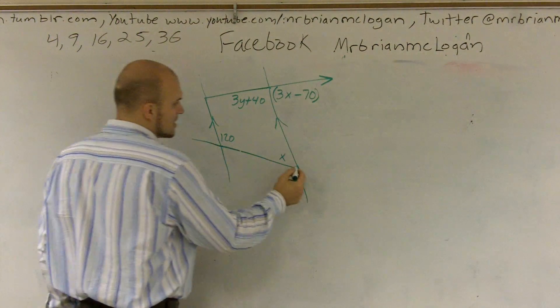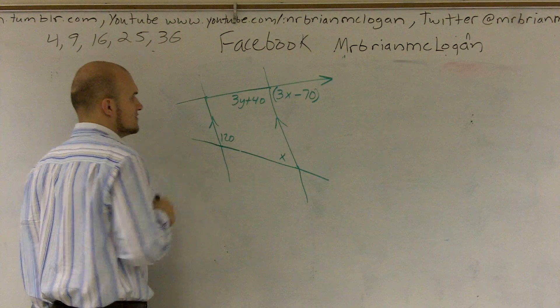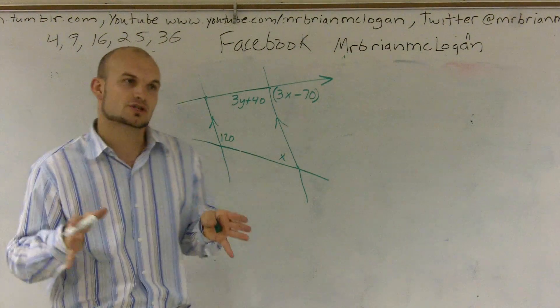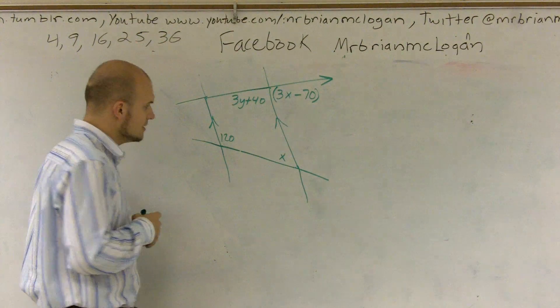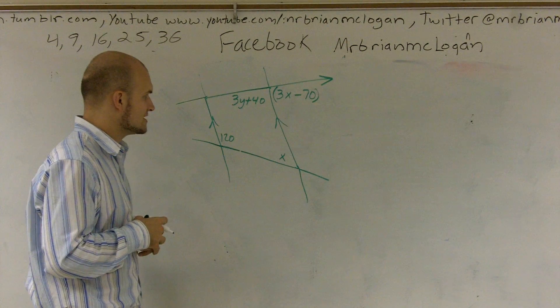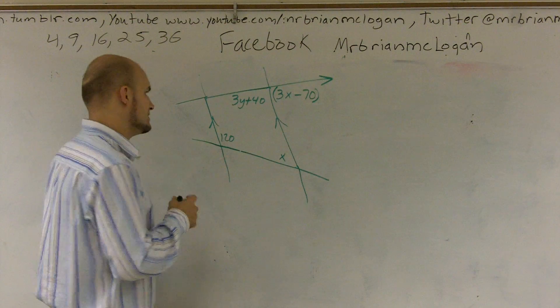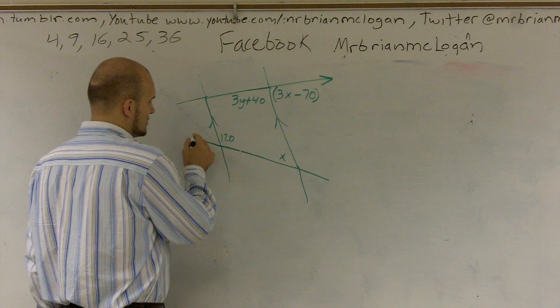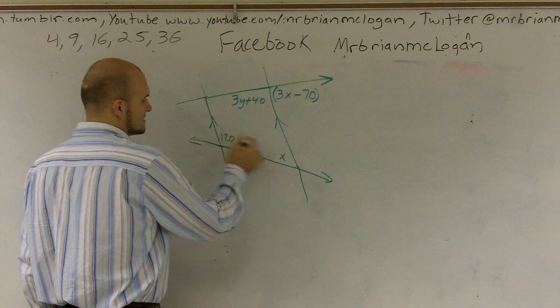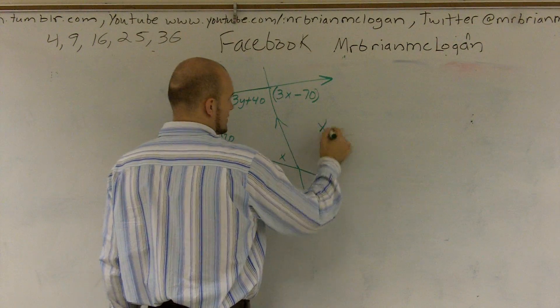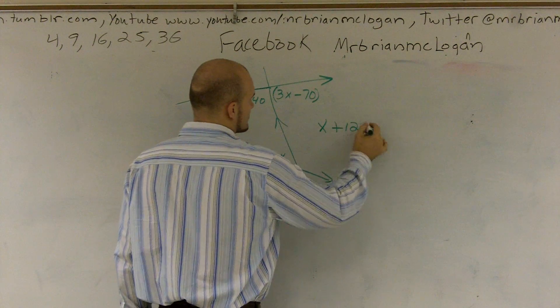I'm also going to extend these lines because these are what we call transversals. Anytime you have a line that crosses two parallel lines, we call it a transversal. So what I notice here with my parallel lines is, let's see, my parallel lines and then my transversal, these are same side interior. And same side interior add up to 180.